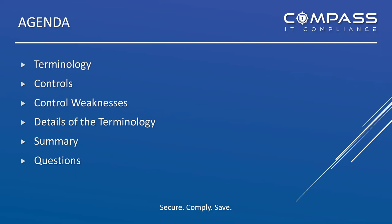We're going to cover some specifics about controls, which is a key facet in any organization, and then the lack of controls or control weaknesses. We'll dive deeper into the different facets of audits and different types of audits, as well as assessments. Then we'll summarize and take questions — please fire those over to Rob, who is listed as the host in the chat, and he'll capture those.